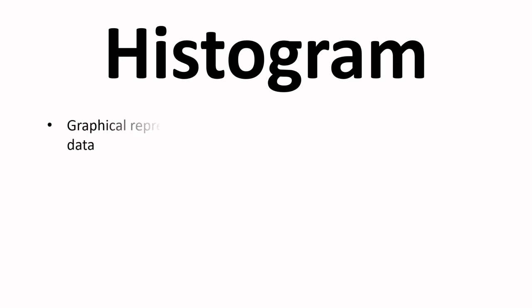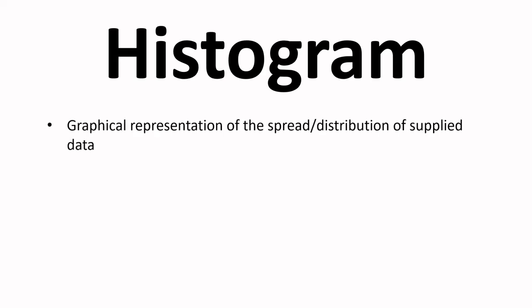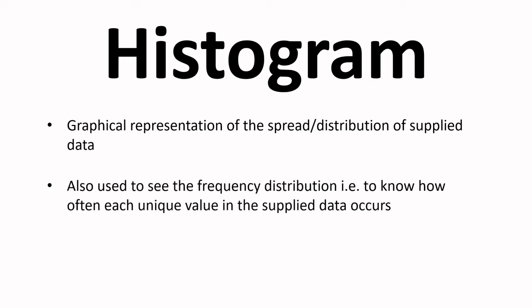There are many ways in which histogram has been defined on the web, but if you read them all and summarize them, you can conclude that a histogram is a graphical representation of the spread or distribution of supplied data. It is also used to see the frequency distribution — that is, to know how often each unique value in the supplied data occurs.